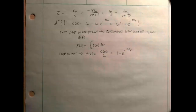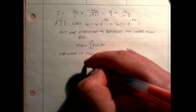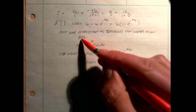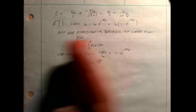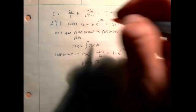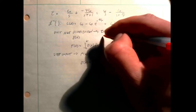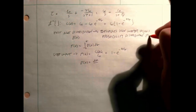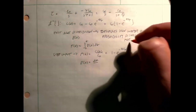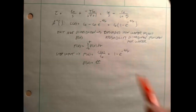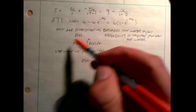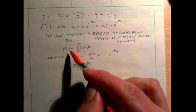F(t) is a dimensionless way to think about how water flows through the reactor — it's the cumulative distribution function for residence time. E(t) is the derivative of F(t), and it's like a probability distribution function for water. Some water that comes in will leave quickly, some will take longer, and E(t) describes that distribution.